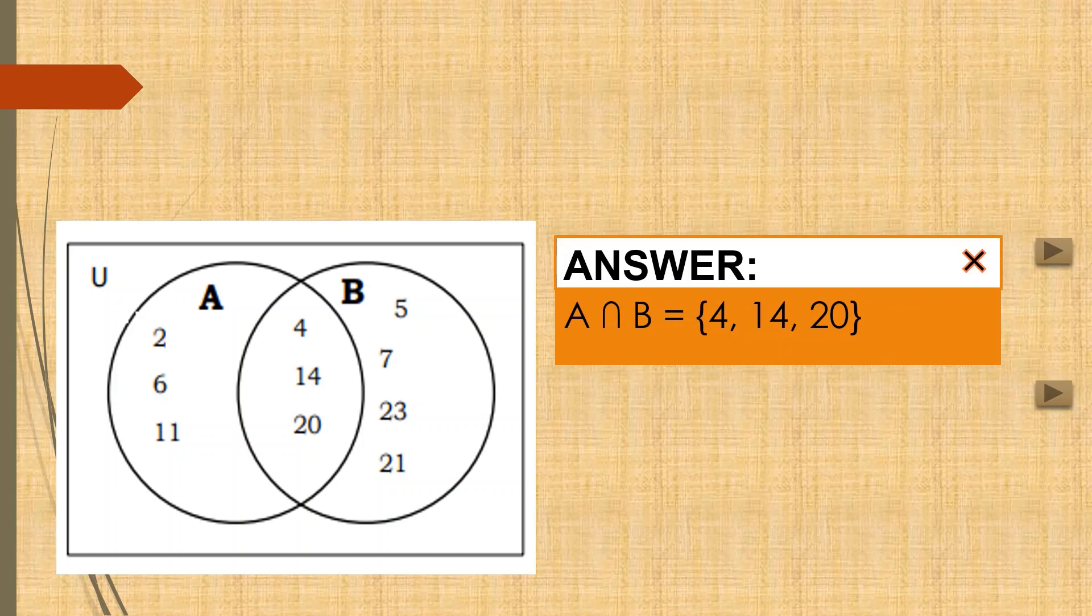Let us now answer the question number 2. What is the intersection of A and B? So, A intersect B is 4, 14, and 20. Dahil dito, sa part na ito, nag-intersect ang A at B. So, those are the numbers or the elements both present on A and B.